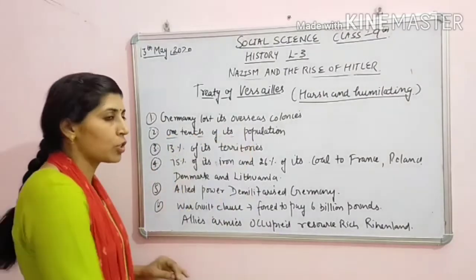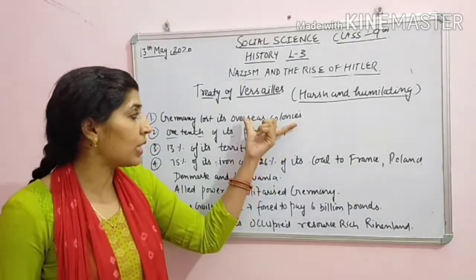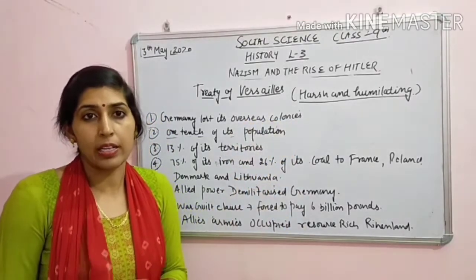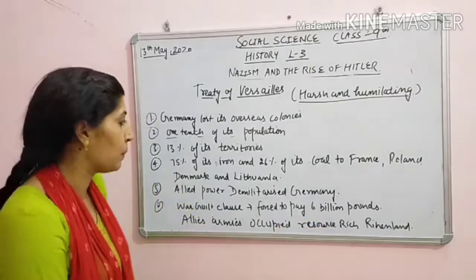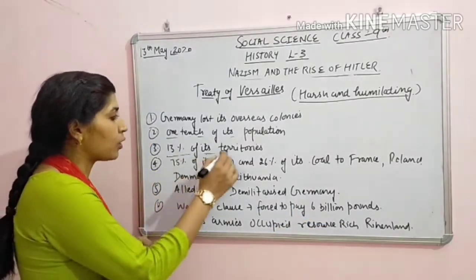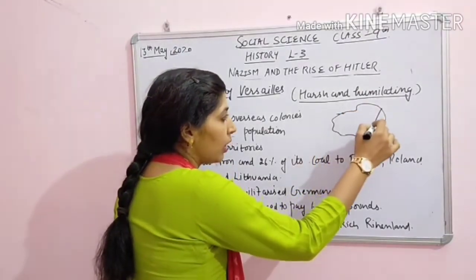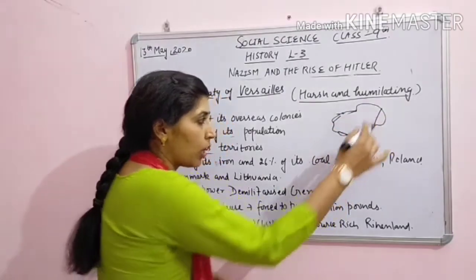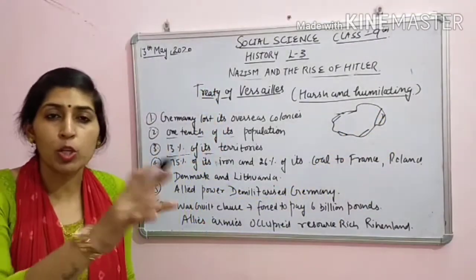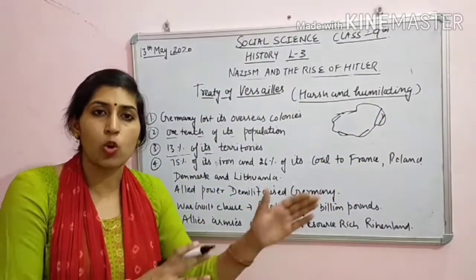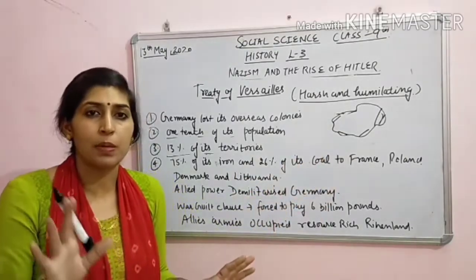Ab tumhari Germany ke bahar tumhara koi bhi territory nahi hai, tumhari jitni colonies hain unpar ab hum kabza kar lenge - kisne kaha, allied parts. Next: one tenth of its population - ab one tenth of its population kyun kaha gaya hai ki yeh jo colonies thi, yahaan par inki one tenth population reh rahi thi, toh colony agar capture kar li hai toh woh population bhi automatically unke control mein aa jaayegi. Next: 13% of its territory - matlab Germany agar yeh hai toh iska 13% part capture kar liya - total jitna area tha uska 13%, kyunki tum responsible ho jo First World War hai, itne log maare gaye, itna nuqsaan hua hai saare countries ka - tum uski responsible ho, iska tumhara 13% territory lengi.